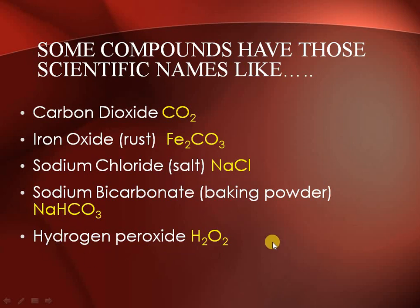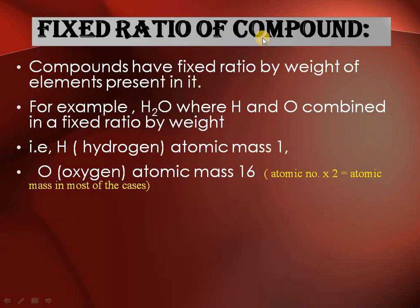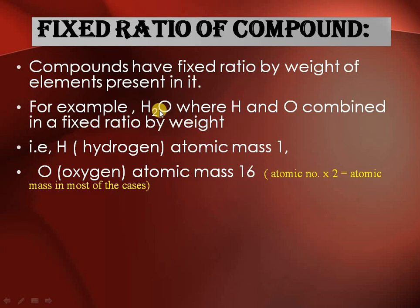Compounds have a fixed ratio by weight of elements present. For example, in H₂O, hydrogen and oxygen combine in a fixed ratio by weight. For hydrogen, atomic mass is 1; for oxygen, atomic number is 8 and atomic mass is 16. Generally, atomic mass of the element is used in most cases.